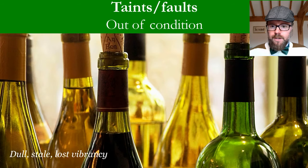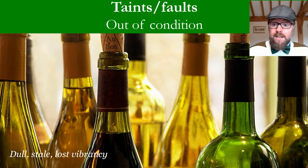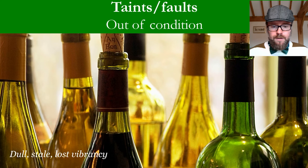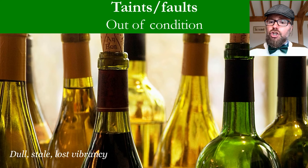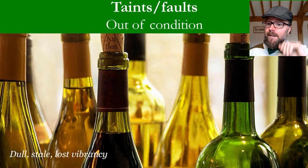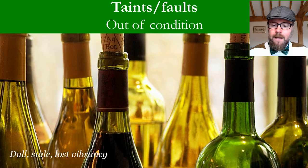Sometimes wines can be out of condition — they have lost their vibrancy and freshness and may taste dull and stale. This is either because they are too old or have been stored in poor conditions: somewhere too hot, too bright, or with too variable temperatures, like a kitchen. In some places, particularly the United States, light affecting the wine is referred to as light struck. This typically happens when wine bottles are sitting in sunlight near a shop window, and combined with being out of condition, the wine may also be experiencing oxidation.